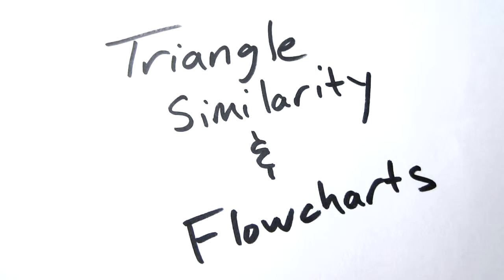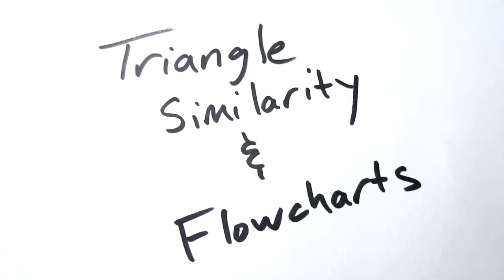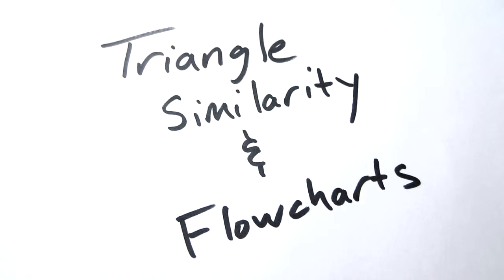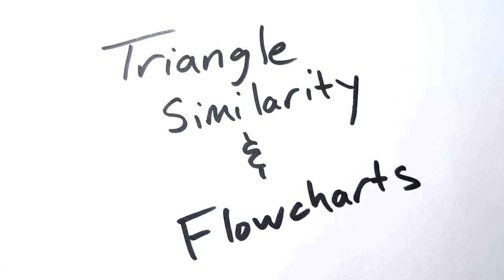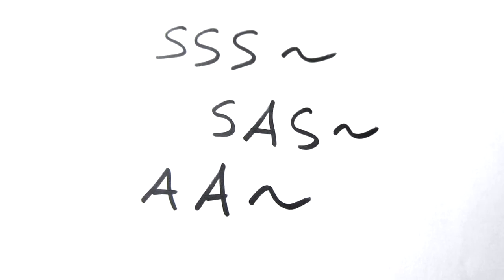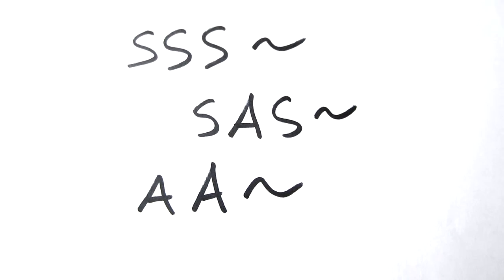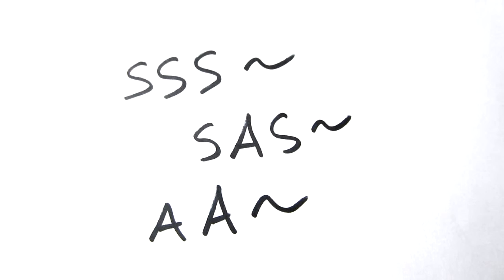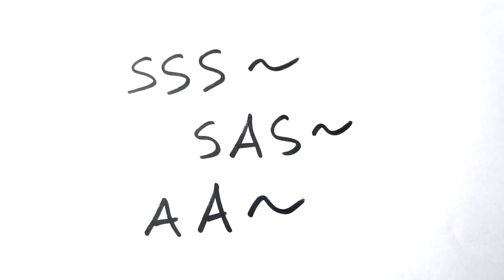Alright, for those of you who need a quick review, I just want to tell you a little bit more about triangle similarity conditions and how to do flowcharts. So a quick reminder: there are three similarity conditions—side side side similarity, side angle side similarity, and angle angle similarity.